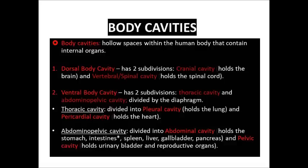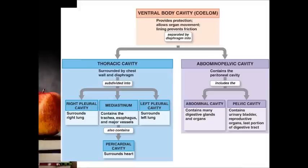The thoracic cavity can be further divided into pleural cavity, which holds the lungs, and pericardial cavity, that holds the heart. The abdominopelvic cavity is a combination of abdominal cavity and pelvic cavity. In this chart, I have simplified the division of the ventral body cavity. If you see the blue box, mediastinum is also part of the thoracic cavity.